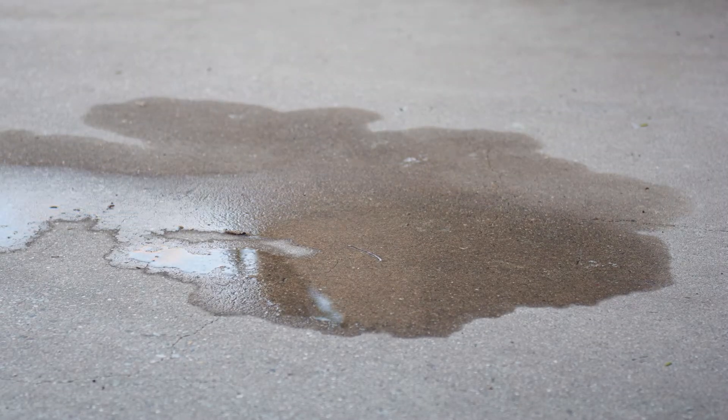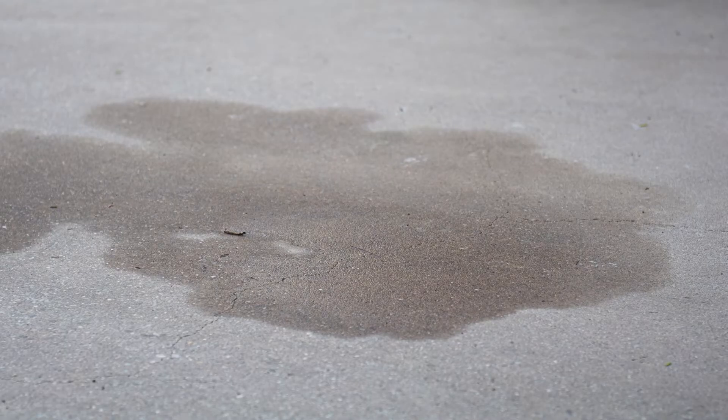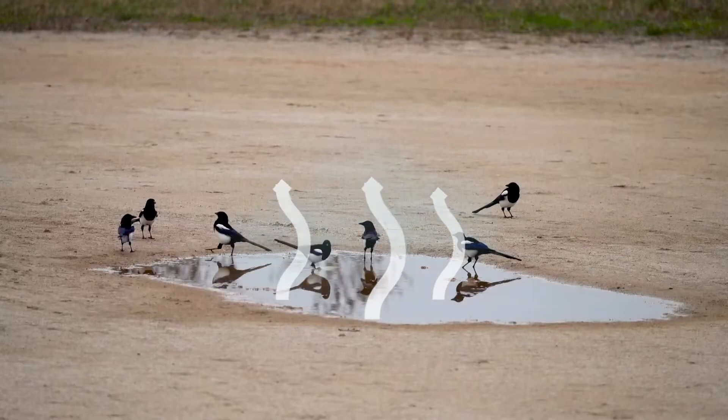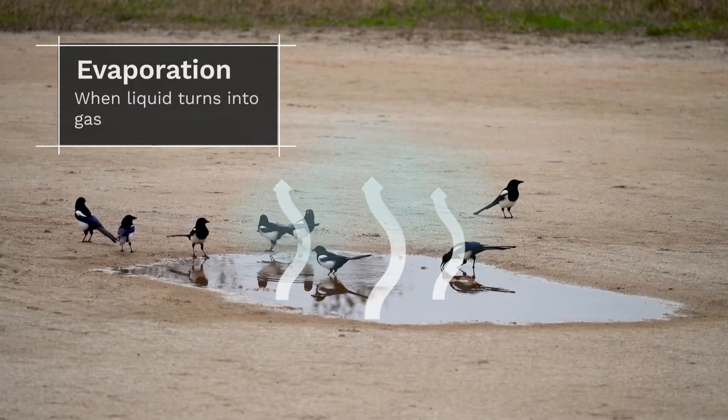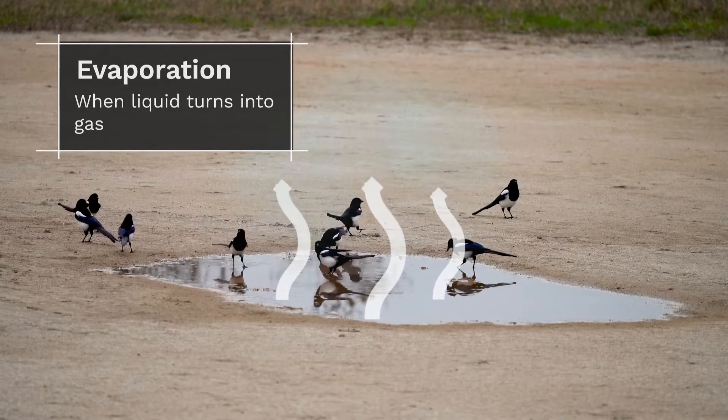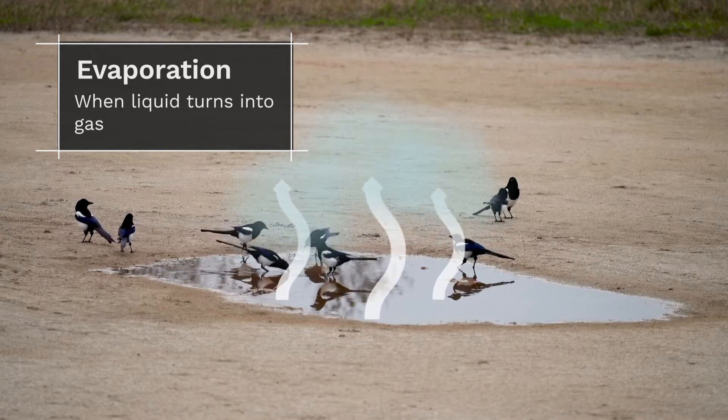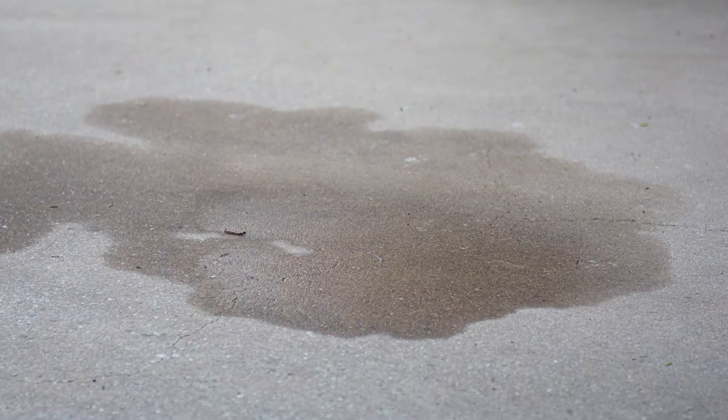When we speed up the footage, look, the puddle is getting smaller. The water is moving up as it evaporates into the air. Evaporation is when liquid turns into gas, like liquid water becoming water vapor. But for water to evaporate, it needs energy.